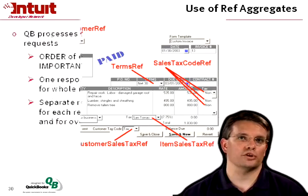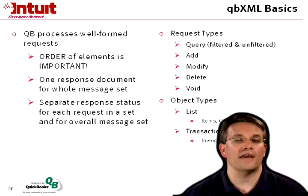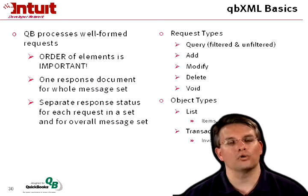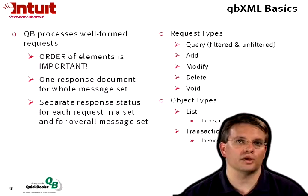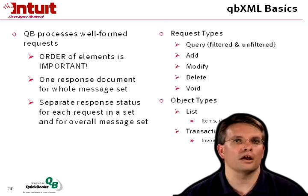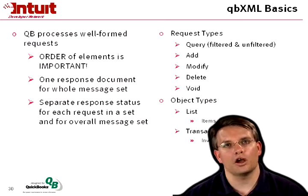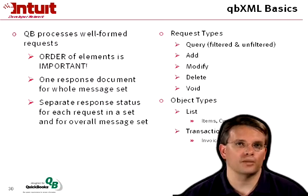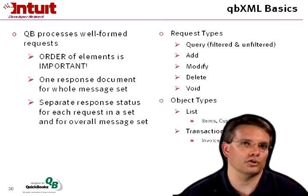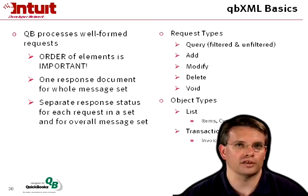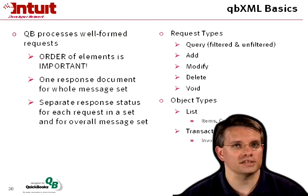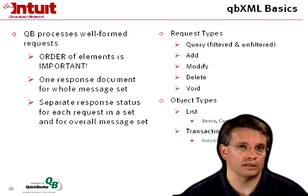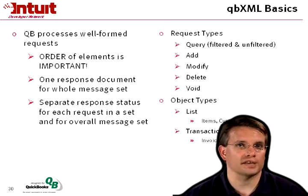The basics of QBXML are pretty straightforward. QuickBooks processes only well-formed requests, and the order of elements is important. XML does allow for non-ordered elements, but parsing an unordered XML document slows down the parser significantly. By requiring ordered elements, we improve parsing performance. QBFC is a good choice if ordering is a problem, since it handles the proper ordering of elements in the QBXML it sends. There's one response document for the whole message set, and a separate response status for each request.